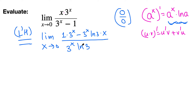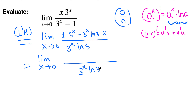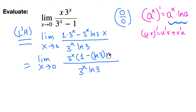Let's simplify and then try to plug in x equals 0. On the bottom we have 3^x times ln 3, and ln 3 is just a decimal number. On the top we have two terms, each with 3^x, so we can factor 3^x out. That leaves 1 minus ln 3 times x inside the parentheses.